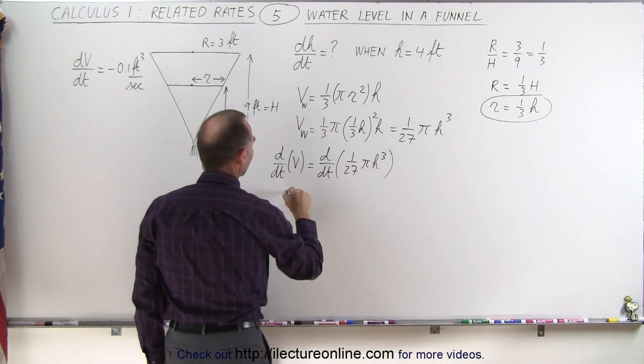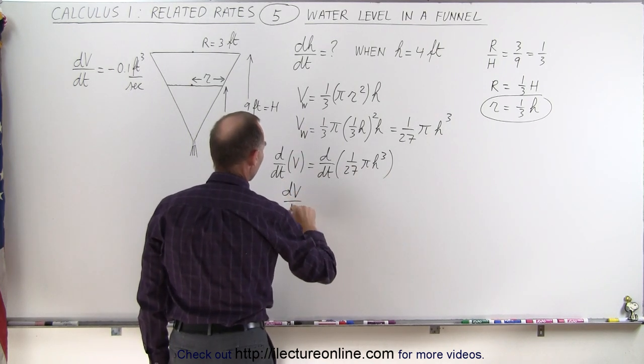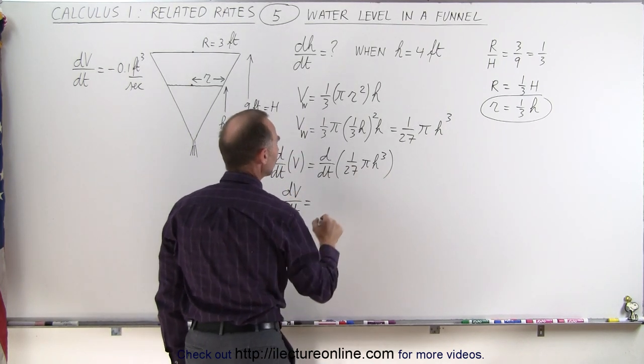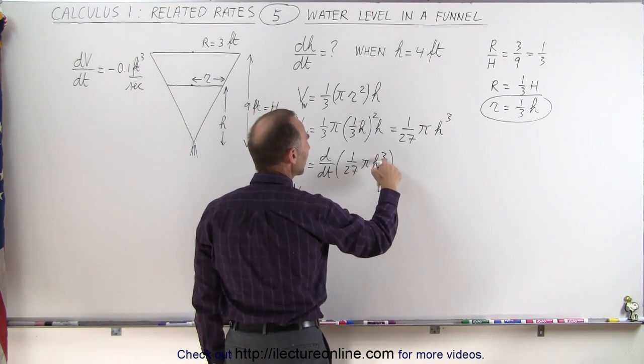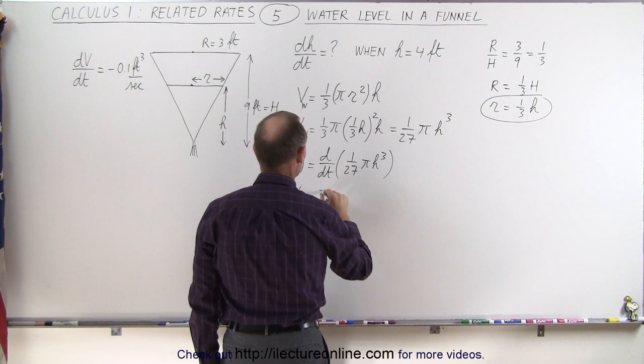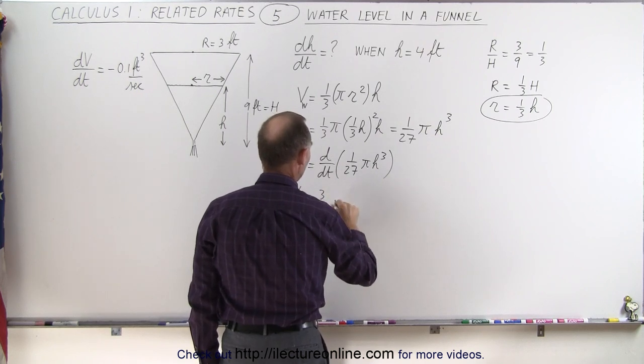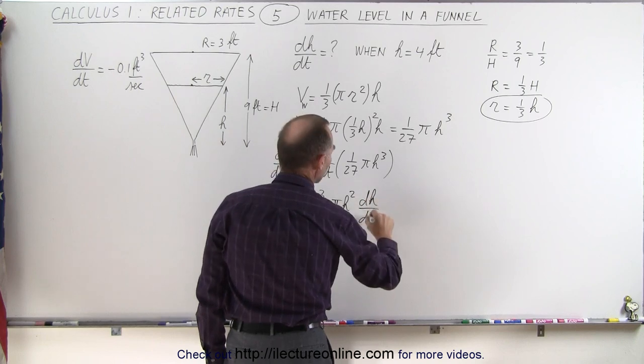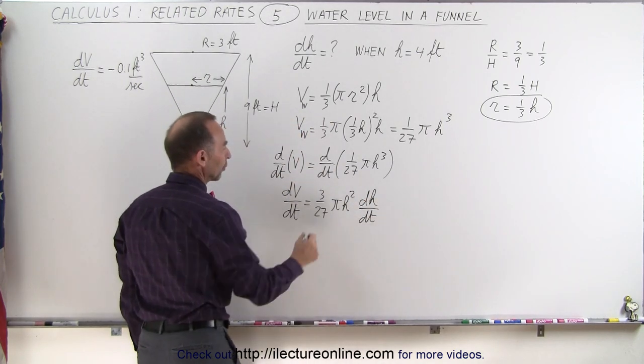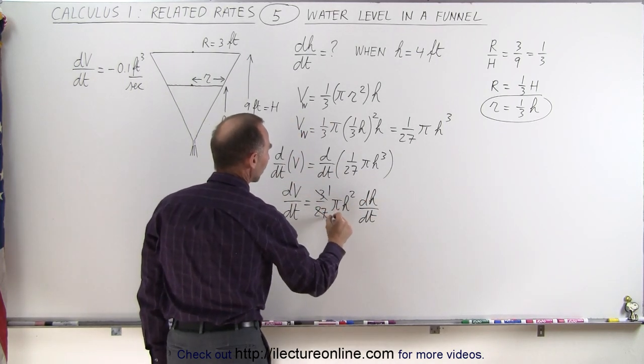When we do so, we get dv dt is equal to, when we differentiate h cubed, we get 3h squared. So that gives us 3 over 27 pi h squared times dh dt. And of course, 3 over 27 becomes 1 over 9.